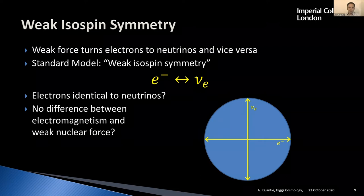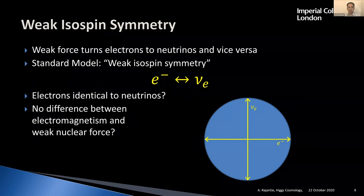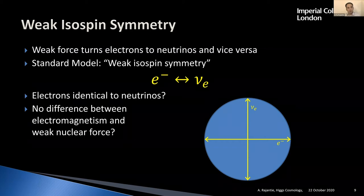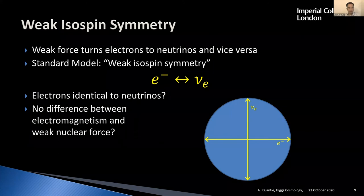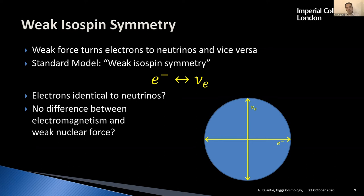That symmetry was first proposed by Sheldon Glashow in the early 1960s. But clearly, it doesn't quite work. In many ways it gives the correct description of the weak nuclear force, but we know there isn't actually a symmetry between electrons and neutrinos. The weak nuclear force isn't identical to electromagnetism. Electrons have an electric charge; neutrinos don't. Electrons have a mass; neutrinos don't. So they are not symmetric — there's no symmetry between them.